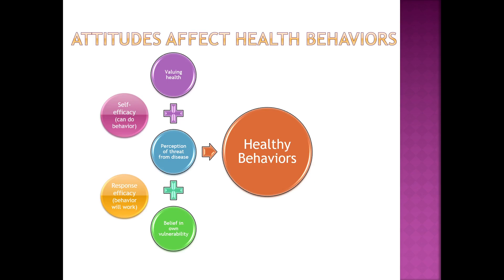When HIV first came on the scene, the government's response was 'don't have sex' — that was not a helpful message. It wasn't until social psychologists got involved and really developed those three items — valuing health, the perception of threat from the disease, and your belief in your own vulnerability — that we were actually able to convince people there is something you can do and help build their self-efficacy. The government had done a good job of scaring everybody. Between 1988 and 1995, people really believed that if you catch HIV, you're dead within a few years.